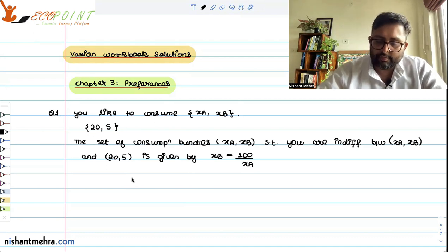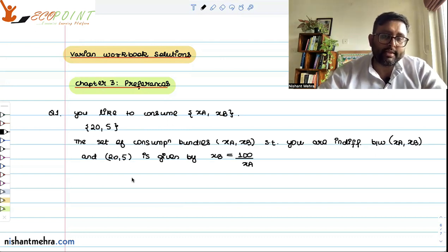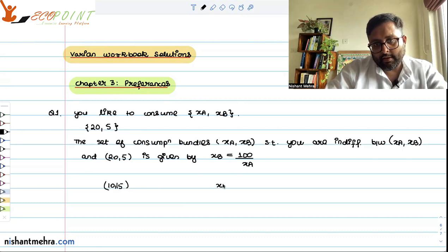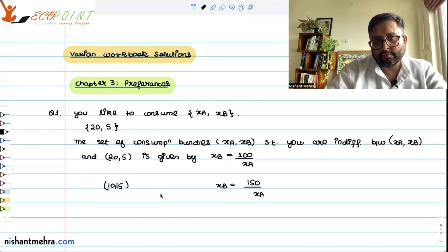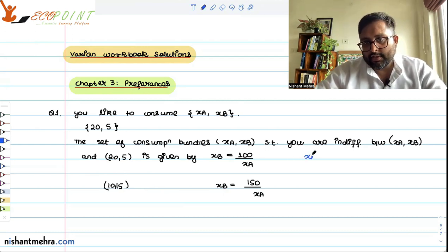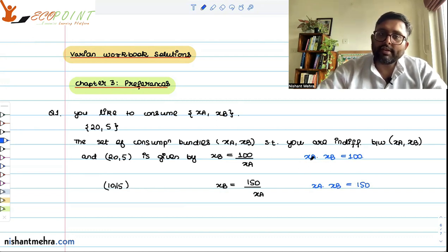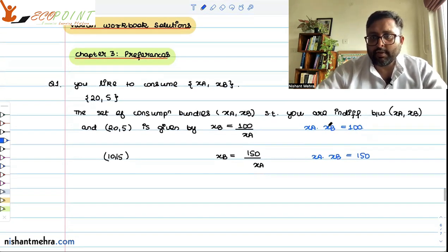Similarly, if we want to write the set of bundles where you are consuming (XA, XB) and you are indifferent between that and another bundle, say (10, 15), that is given by XB equals 150 divided by XA. From the first expression, XA times XB equals 100, and from the second, XA times XB equals 150. You can easily find points of XA and XB giving you 100.